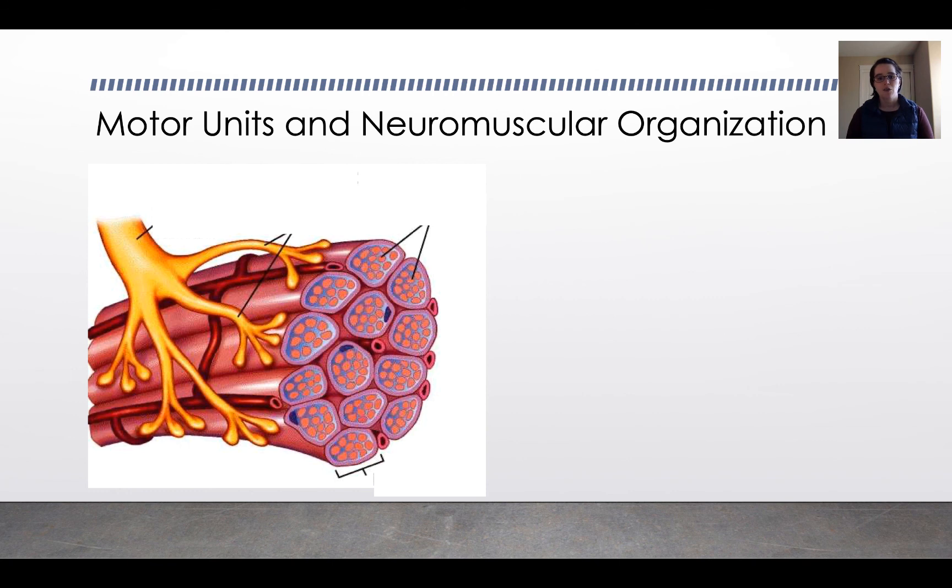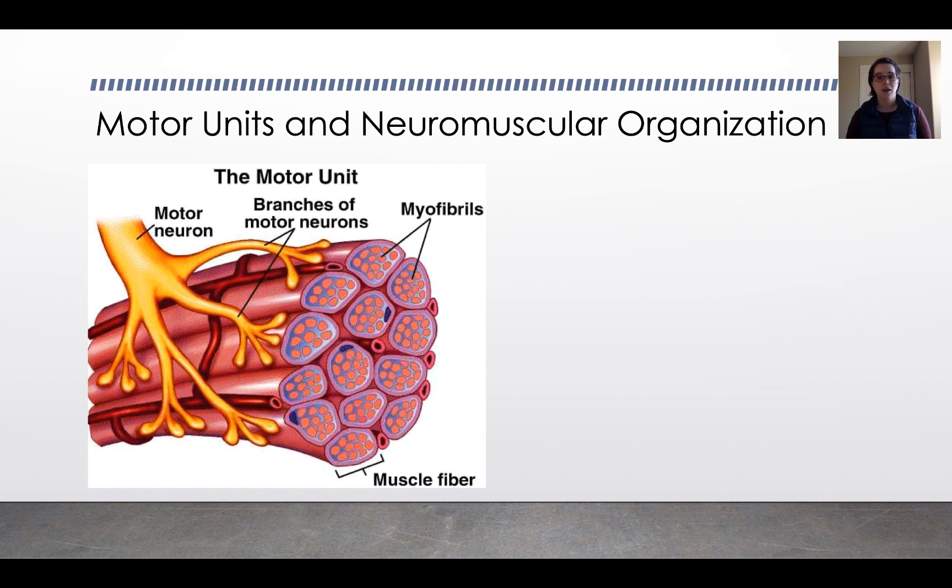So the way that the muscles work are that muscle fibers are made up of myofibrils. Each of these groups of muscle fibers is innervated by a motor neuron which innervates multiple muscle fibers. So a single motor neuron innervates multiple muscle fibers, and this whole thing together is called the motor unit.